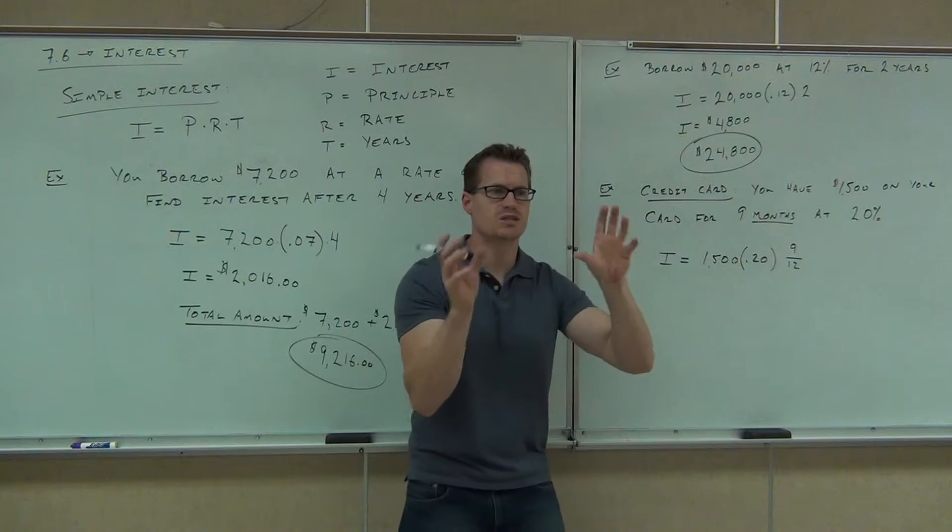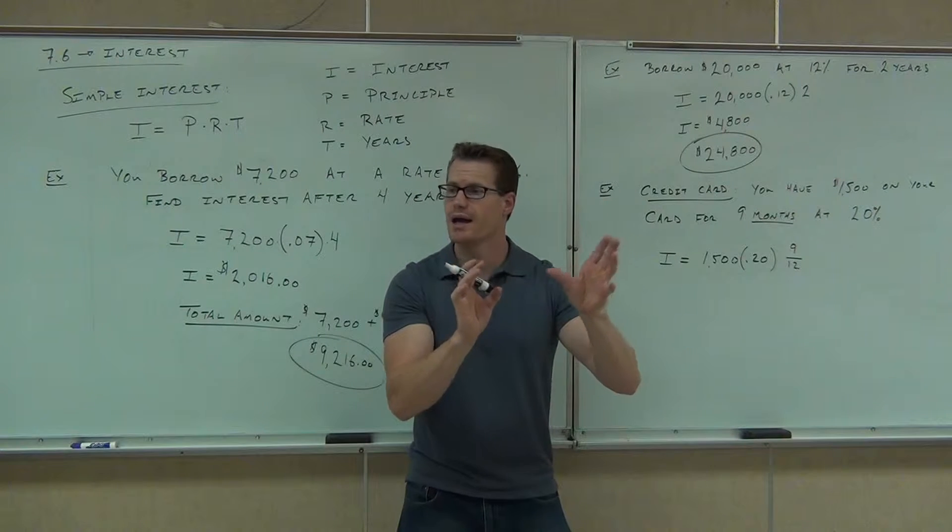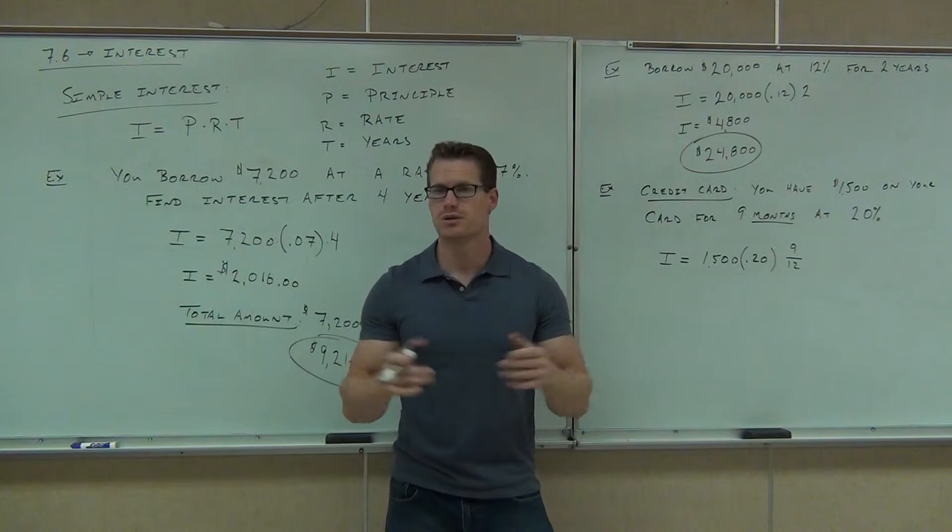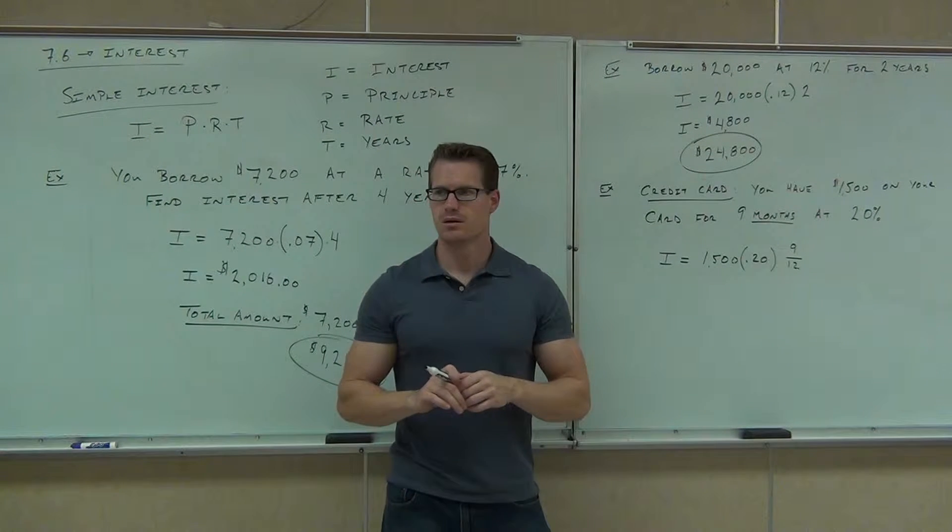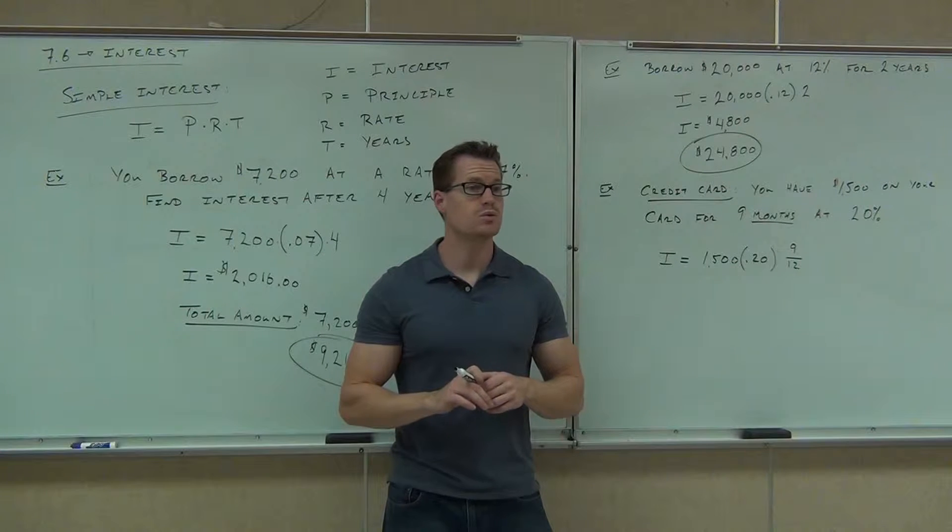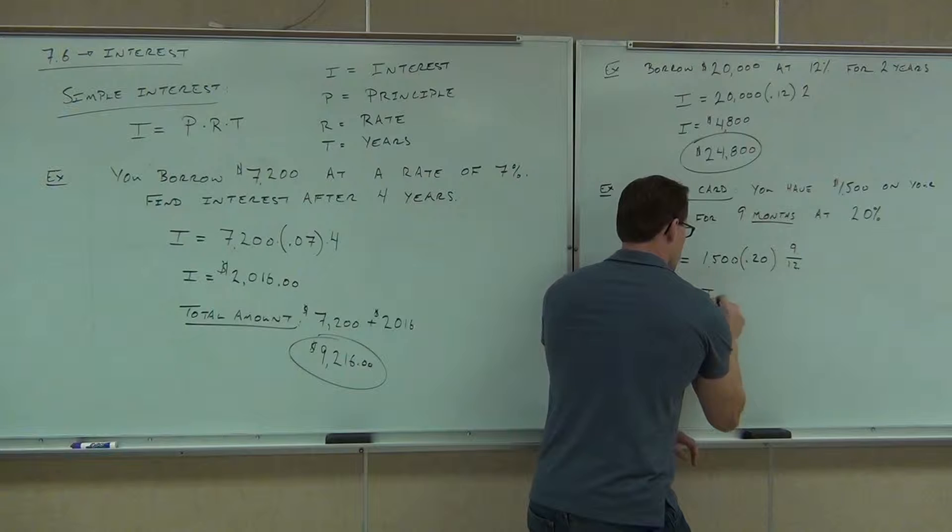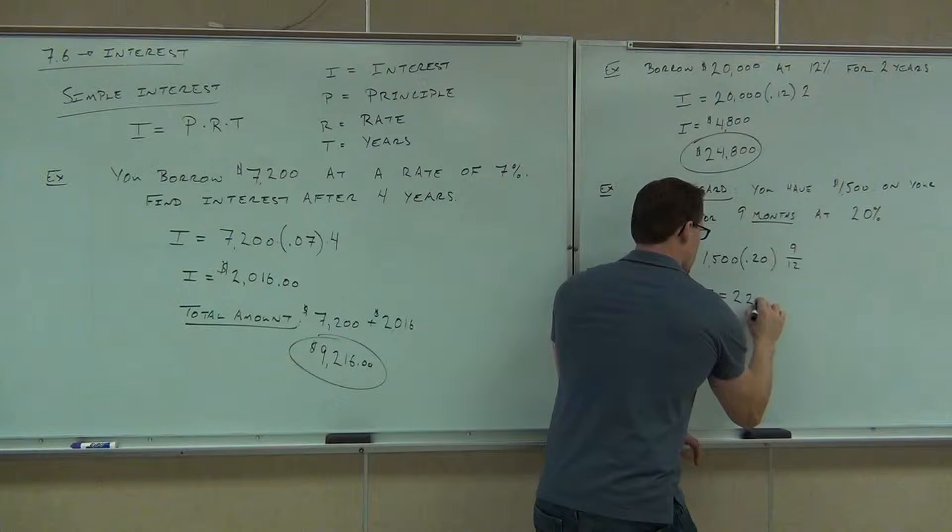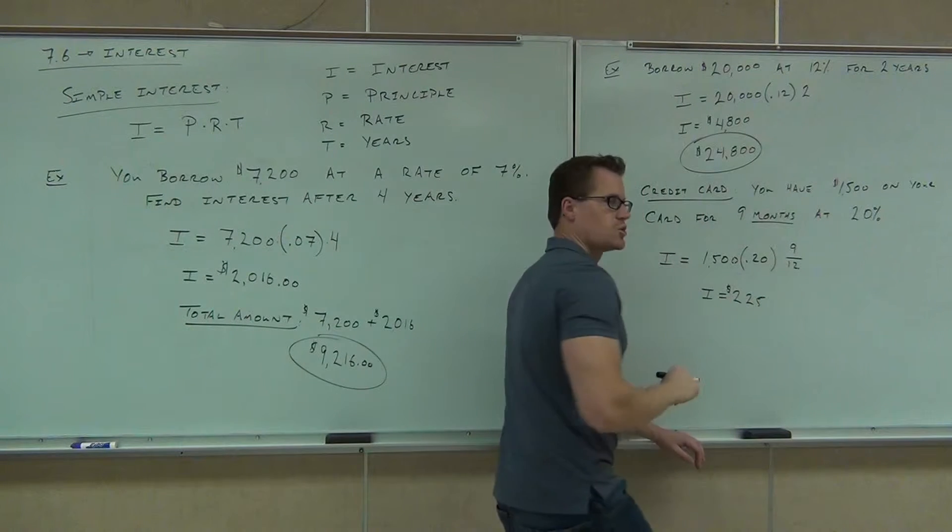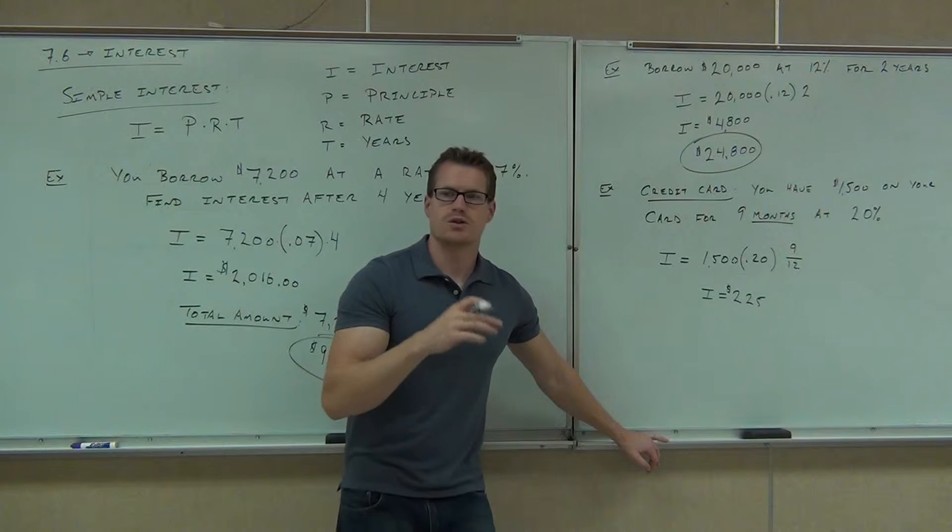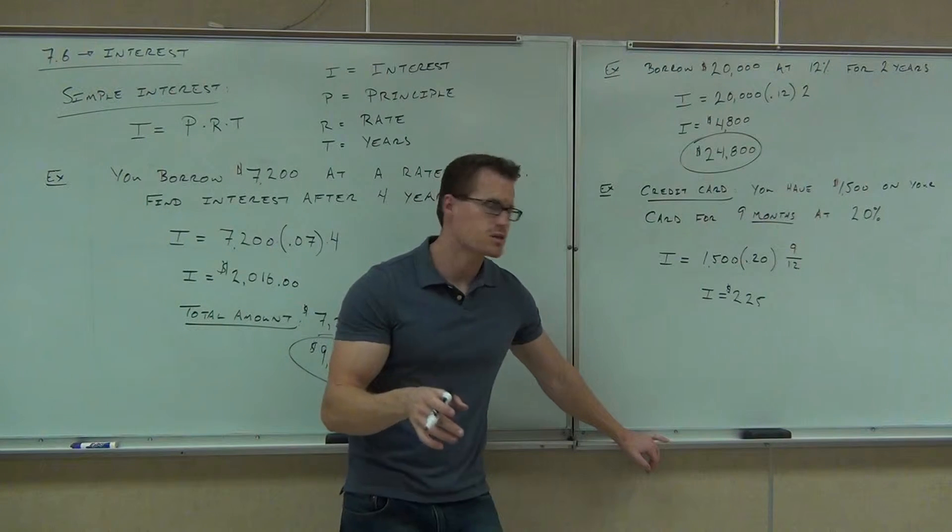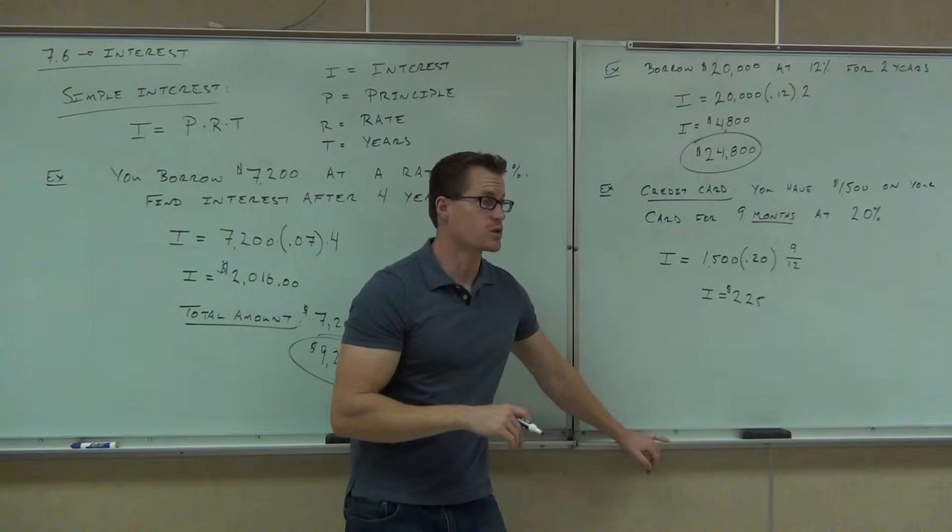Then multiply by 1500. You see it doesn't matter the order in which you multiply as long as you don't round the numbers. The interest is $225, so you can figure out the total amount due at the end of nine months by adding that together. You're going to owe $1,725.